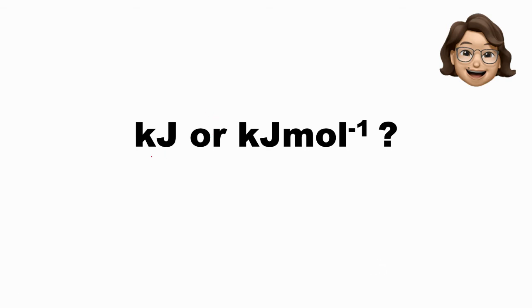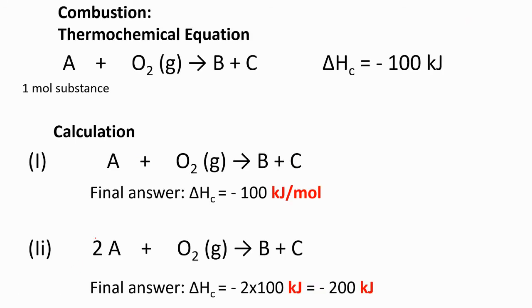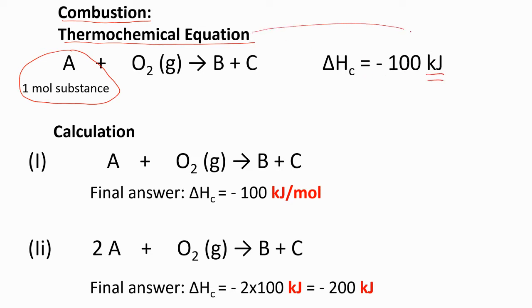Let's decide when should we use kilojoule and when should we use kilojoule per mole for calorimetry. For combustion, for example, if one mole of A is combusted in excess oxygen, to write the thermochemical equation we only use kilojoule, because we understand that A is already one mole of substance.